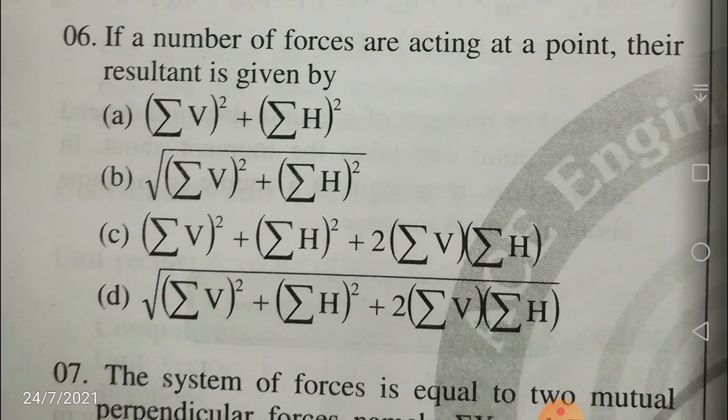If a number of forces are acting at a point, the resultant is given by — where σV is the algebraic sum of the vertical components and σH is the algebraic sum of the horizontal components. From the fundamentals, the resultant of the component forces should be equal to the square root of σV squared plus σH squared. The resultant is equal to the square root of the algebraic sum of the horizontal components whole squared plus the algebraic sum of the vertical components whole squared. Your answer is B.